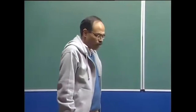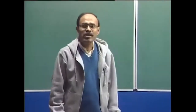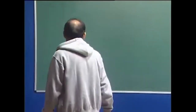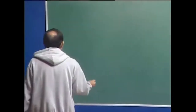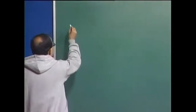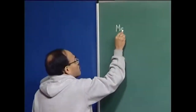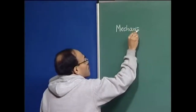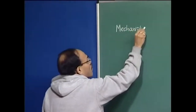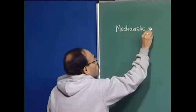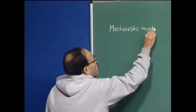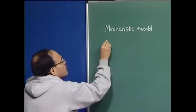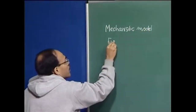How many types of mathematical models do we generally encounter in steel making? Broadly speaking, we would say that we have a mechanistic model and an empirical model.